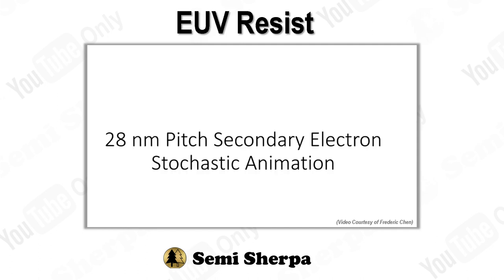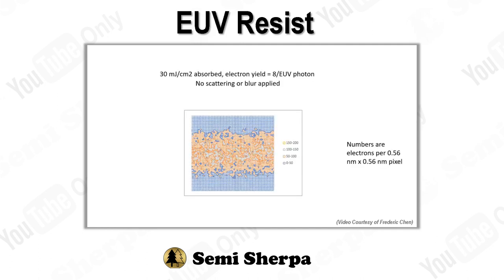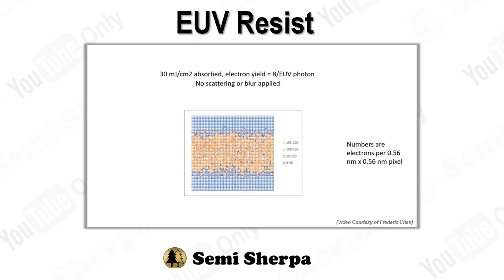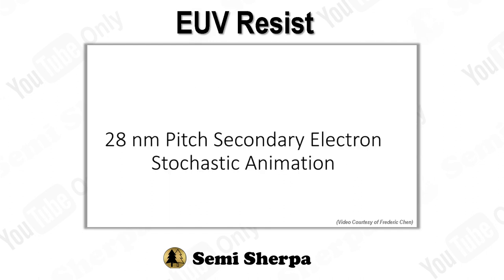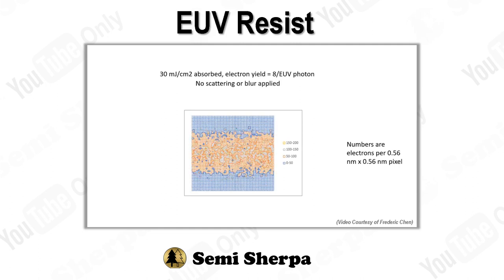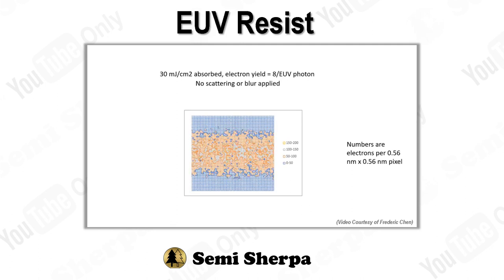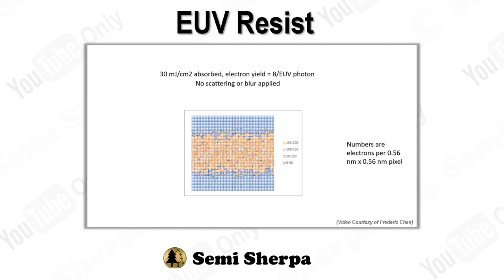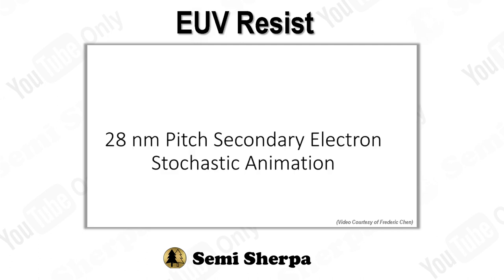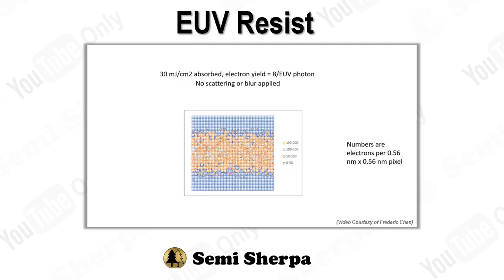Our second segment will demystify the stochastic effects in CAR, drawing a parallel between the predictable world of classical physics in deep UV and the unpredictable quantum mechanics in EUV. Next, we introduce the innovative Inprea Metal Oxide Resist, MOR, which leverages tin atoms for enhanced EUV absorption, marking a significant advancement in high-volume manufacturing. In our final segment, we explore cutting-edge strategies to navigate the resolution, line-width roughness, and sensitivity trade-off. Before we dive deep, I highly recommend revisiting our previous discussions for a fuller understanding.